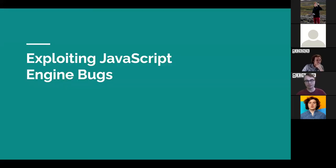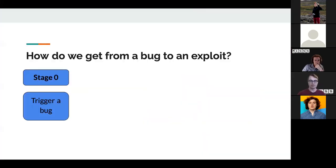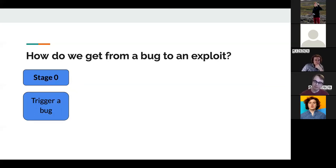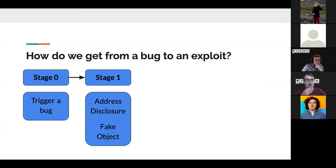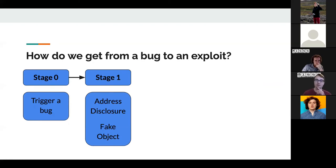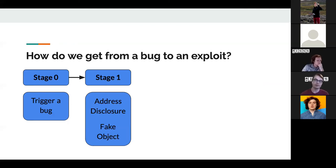Now we can talk about how we actually exploit these bugs. The main question is: how do we get from a bug to an exploit that steals your cookies or gives a reverse shell? Here's the high-level overview: first we trigger a bug, and then once we have a bug, we can do something we're not allowed to do. In JavaScript you just have objects, numbers, and strings — nowhere do you get to just read the address of an object.